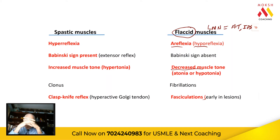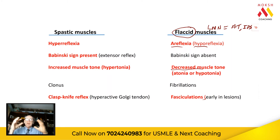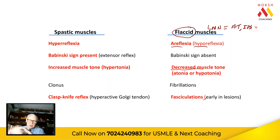They begin to die out after about five or six weeks and are not long term. And of course, by the fact you're not contracting the muscle fibers, you get severe atrophy. So that's another characteristic of a lower motor neuron lesion.